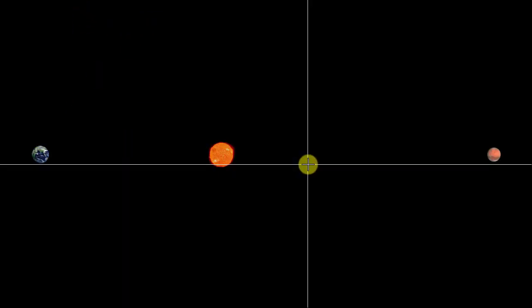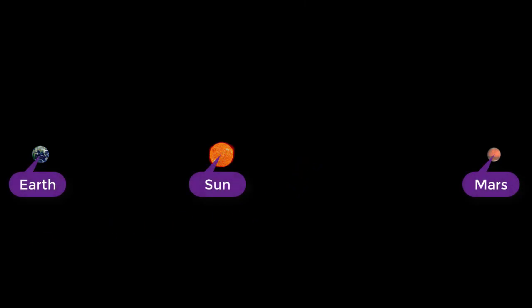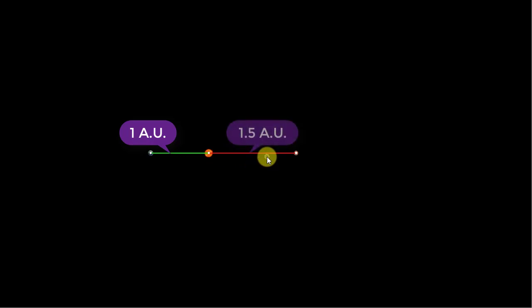So here are the three players, sun, earth and Mars. Now, we are going to plot the distances between them. The distance between sun and earth is, if you take it as one unit and it is indeed called as one astronomical unit, then the distance between Mars and sun is about one and half times that. So, 1.5 astronomical unit.